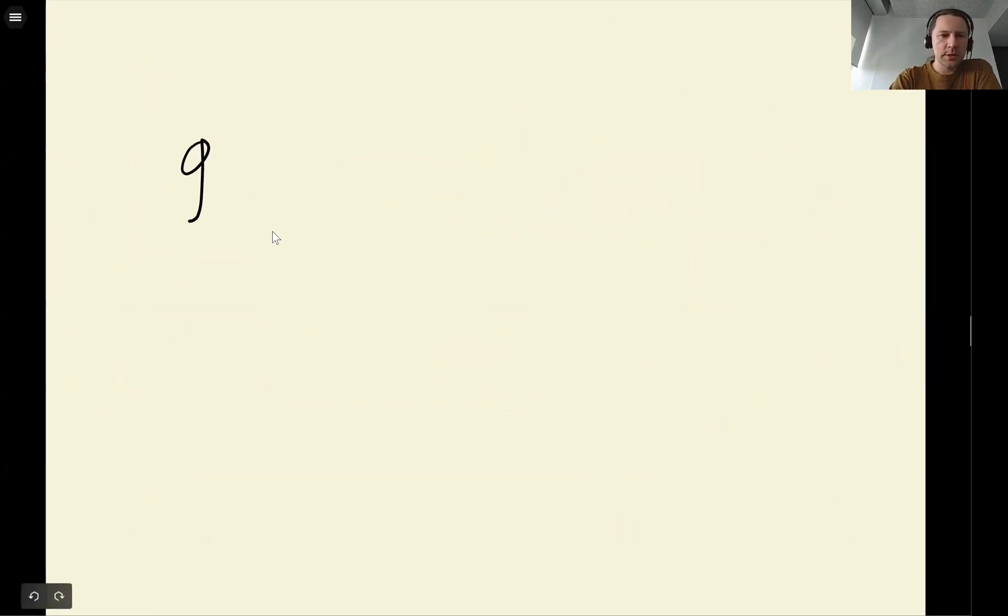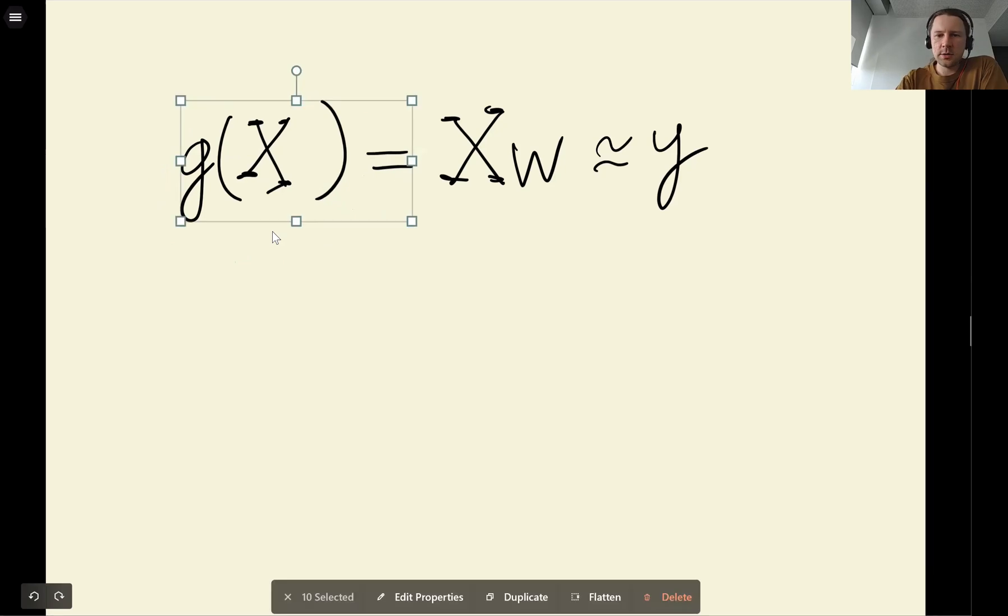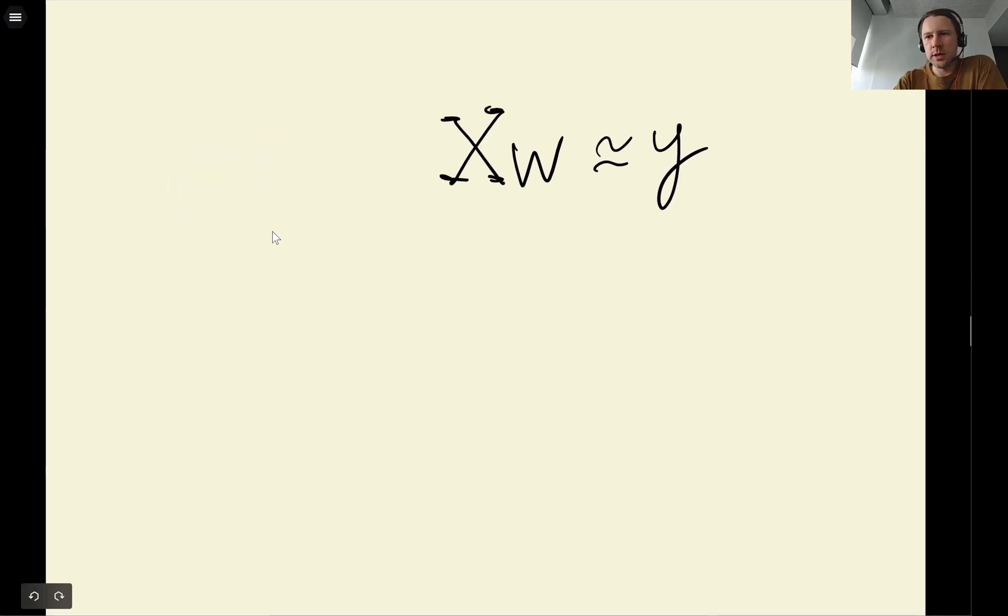So remember that for us this g of x, the function we have, looks like that. So this is capital X, the feature matrix, times the weights vector. And what we want to do is we want this to be close to y. So ideally, we want this to be equal to y. But often it's not possible.